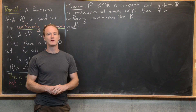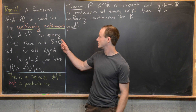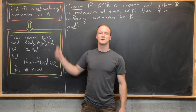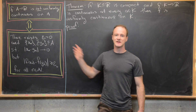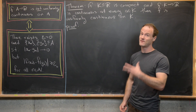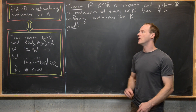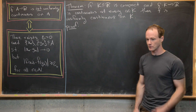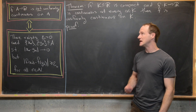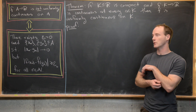The best way to prove this is via a result which gives us an equivalent definition of uniform continuity. This is a theorem we proved in a previous video about how to show something is not uniformly continuous — which may seem like the opposite of what we need, but we'll prove this by contradiction, so it's exactly what we need.